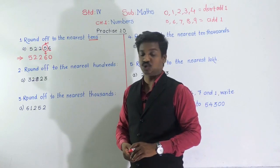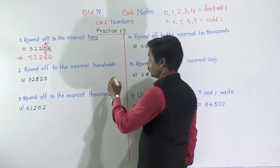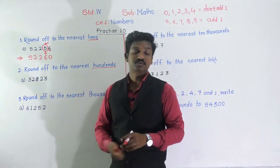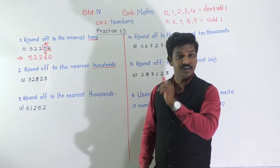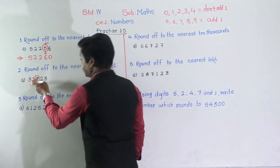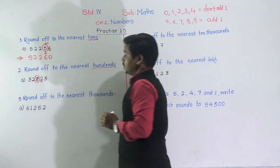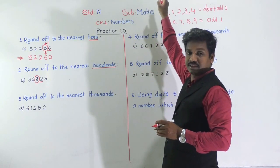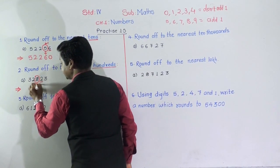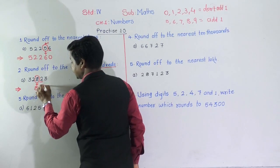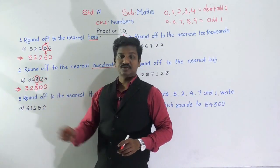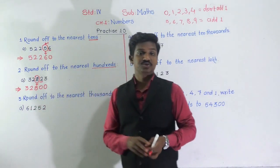Question 2: round off to the nearest hundreds. Same rules and procedure. First, find and circle the hundreds place digit — ones, tens, hundreds — there is 8 at the hundreds place. Then see the next digit: it is 2. It comes in our first rule — next digit is 0, 1, 2, 3, or 4 — so do not add 1. Take 8 as it is, write two zeros for the next two digits, and take the before digits as they are.